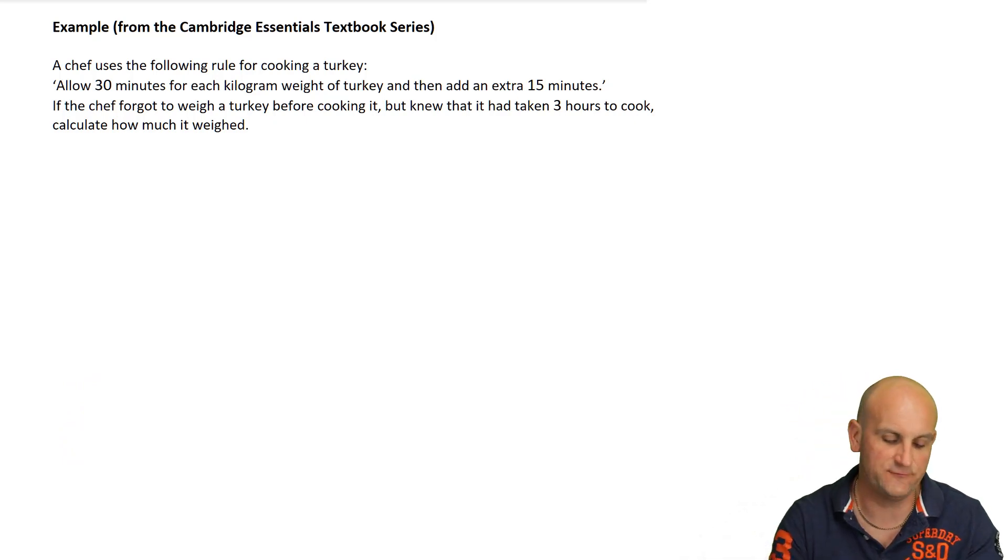A chef uses the following rule for cooking a turkey. Allow 30 minutes for each kilogram weight of turkey, and then add an extra 15 minutes. The chef forgot to weigh the turkey before cooking it, but knew it had taken three hours to cook. Calculate how much it weighed.